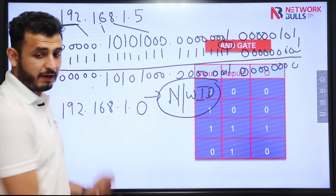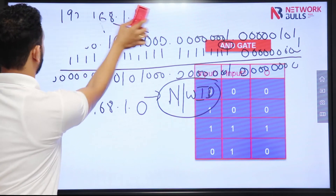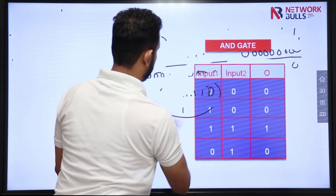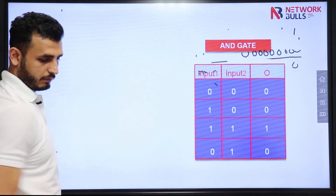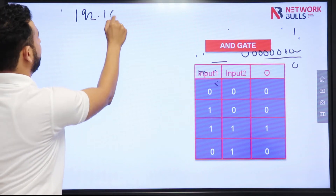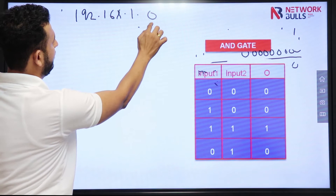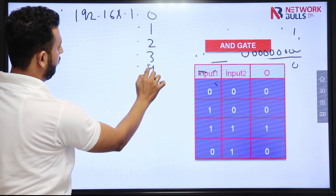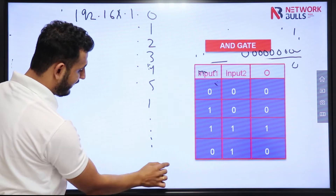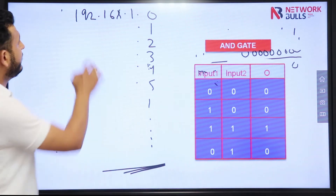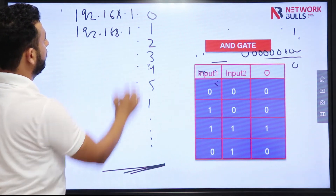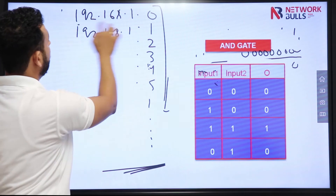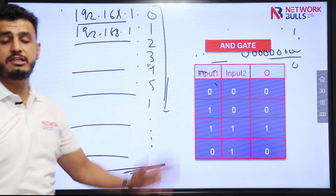The network starts from 192.168.1.0. The first IP is .0, the next will be .1, then .2, .3, .4, .5, and so on. Throughout the network, only host bits will change; network bits will remain the same for all IPs.